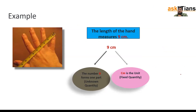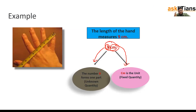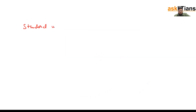So measurement is a combination of a number and a unit. The number gives magnitude and the unit gives the fixed quantity used. Now I want to talk about standard units of measurement. For measuring length, a cloth merchant uses a meter rod, and a tailor uses a tape. What is the need for a standard unit? Consider an activity where we measure the height of a person using hand span versus a meter scale or tape.